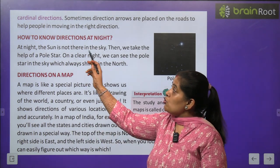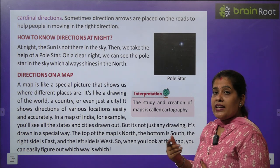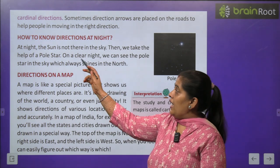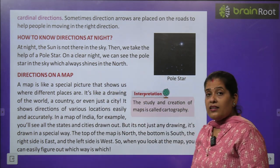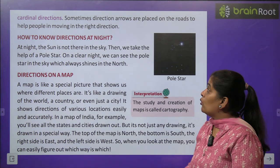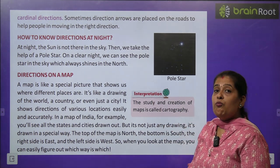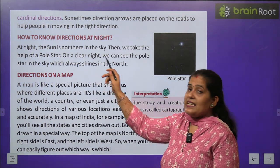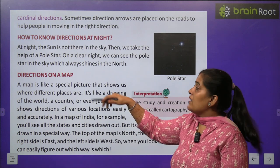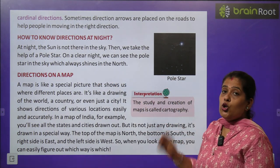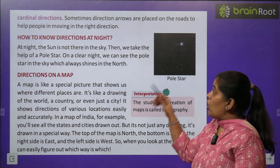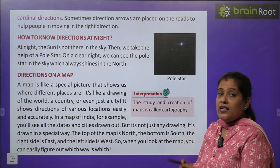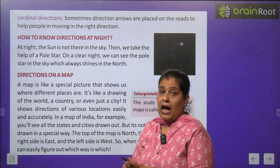अब हम पढ़ेंगे how to know directions at night. रात के समय कैसे पहचानते हैं कि क्या direction है? At night, the sun is not there in the sky — रात के समय सूरज नहीं होता है। Then we take the help of the pole star. तब हम pole star की help लेते हैं। On a clear night, we can see the pole star in the sky which always shines in the north — वो pole star north की दिशा में चमकता है।